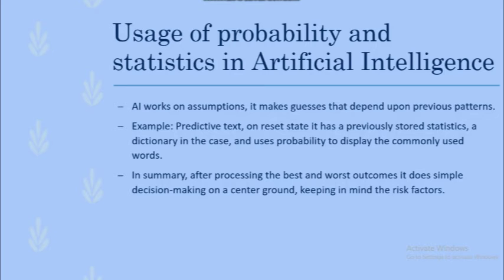How it works is basically by processing the best outcome and the worst possible outcomes, and thus making a simple decision on a middle ground — a center ground — keeping in mind all the risk factors and all the disadvantages.